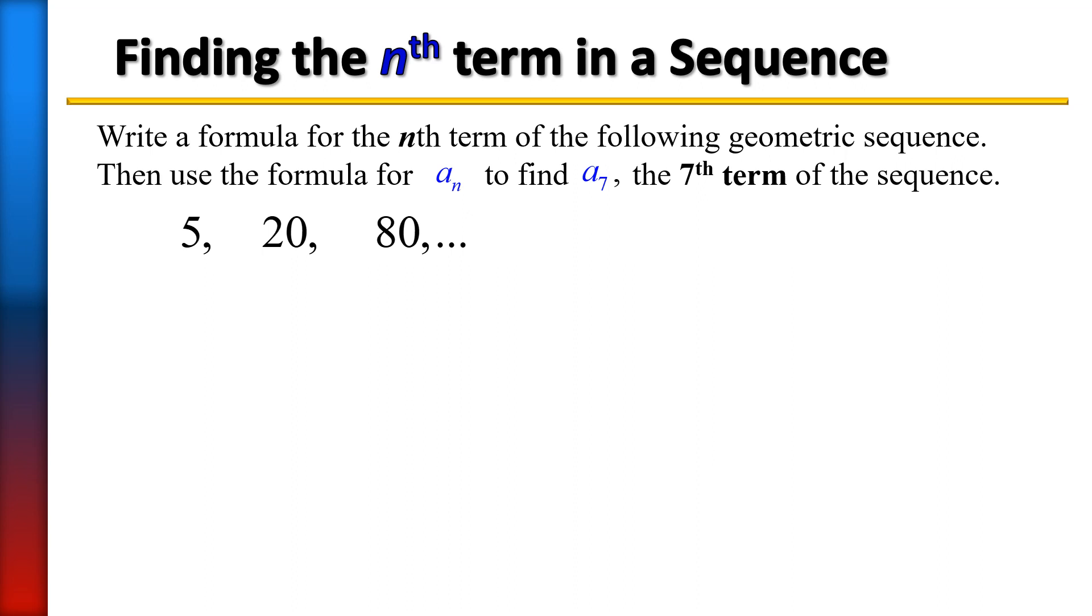We were not given our common ratio, so let's go ahead and find it. Looking at our terms from the first term to the second, it's an increase, so obviously that's going to be multiplication. What did we multiply 5 with to get 20?